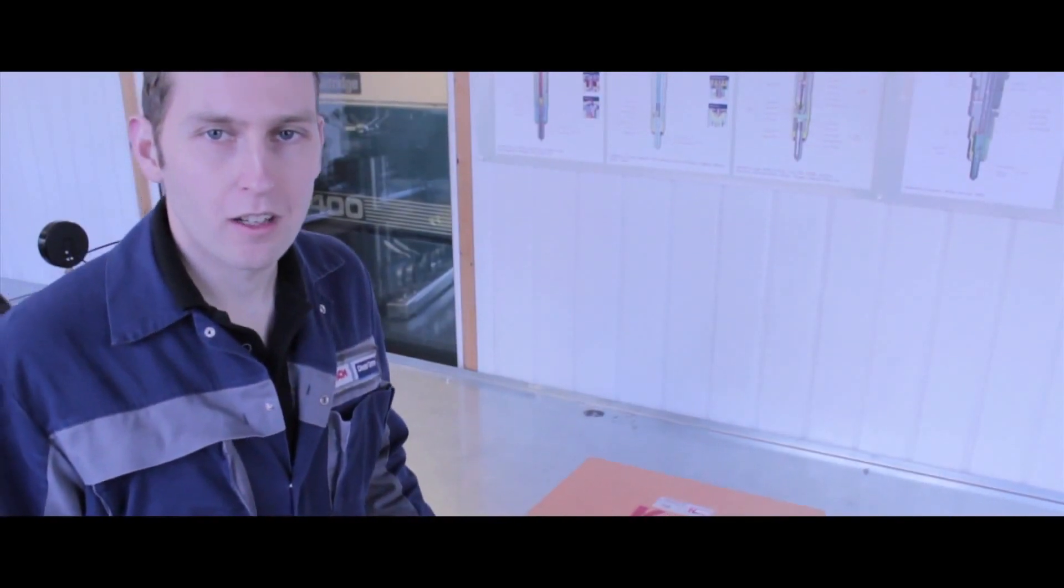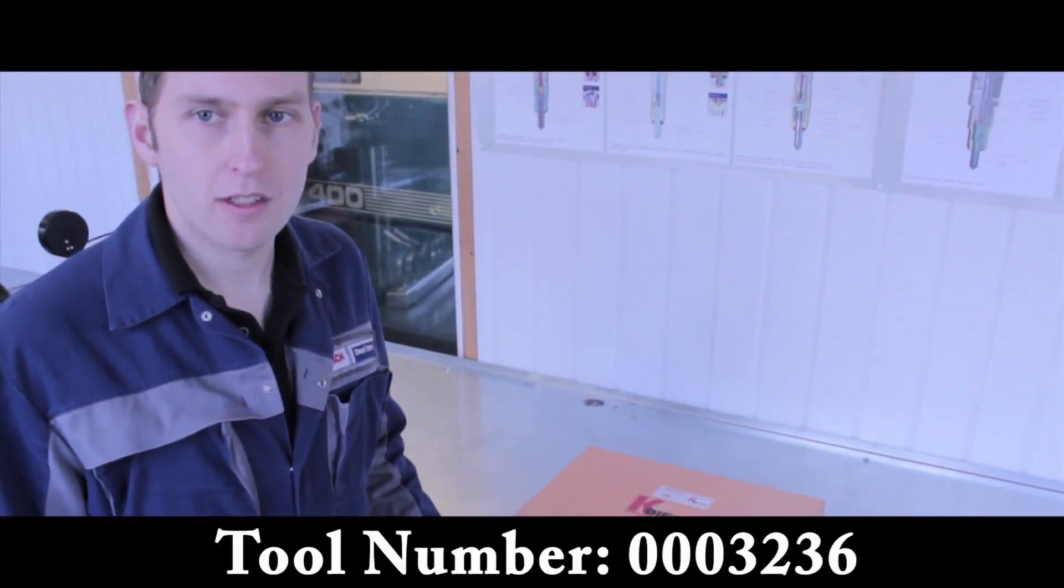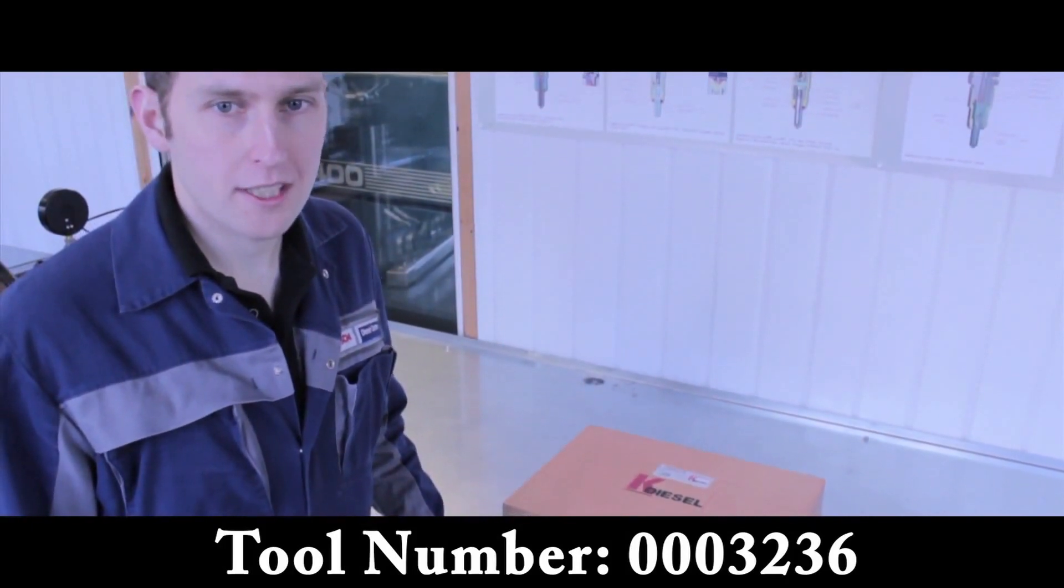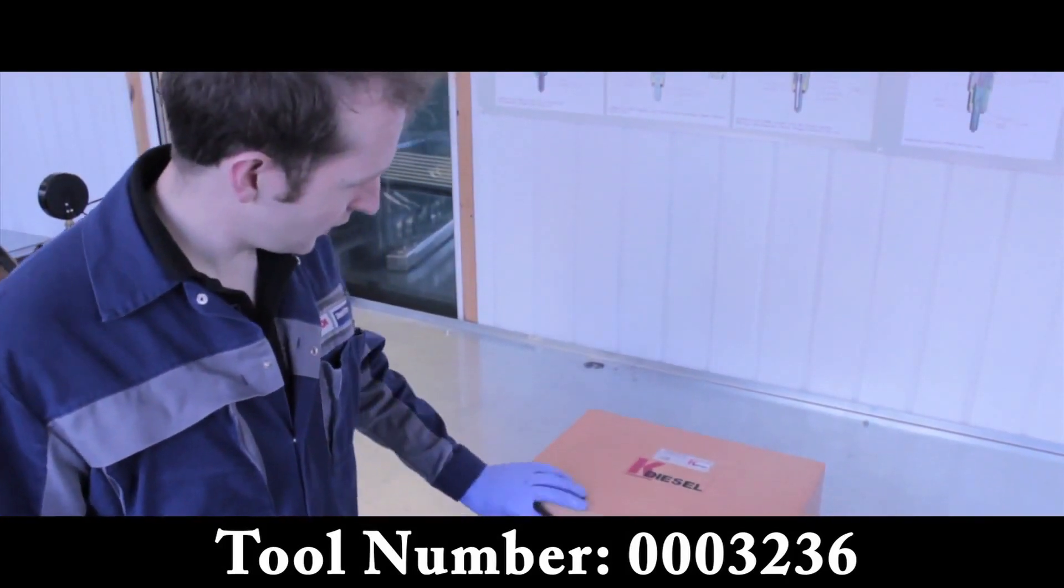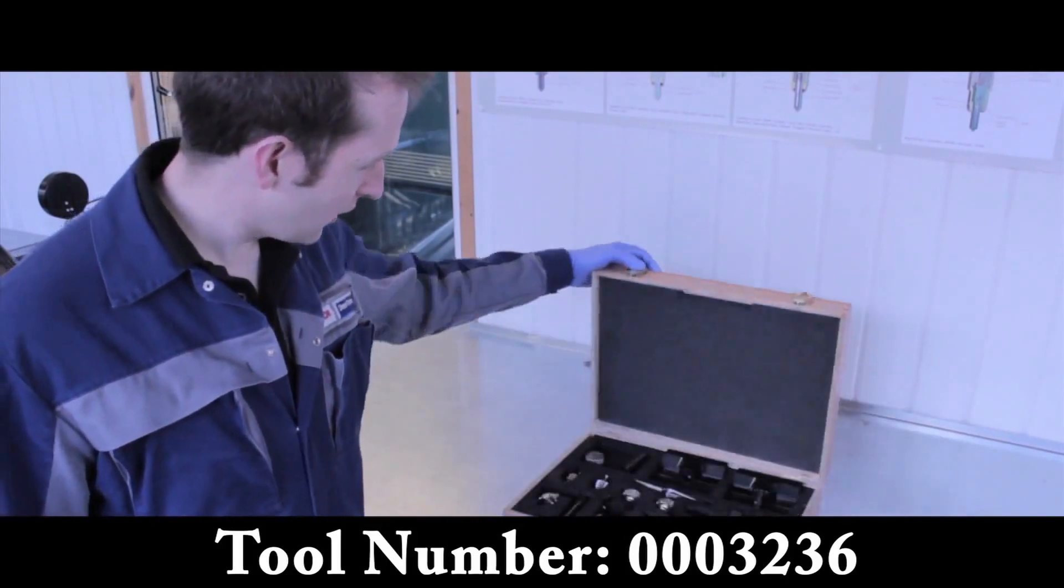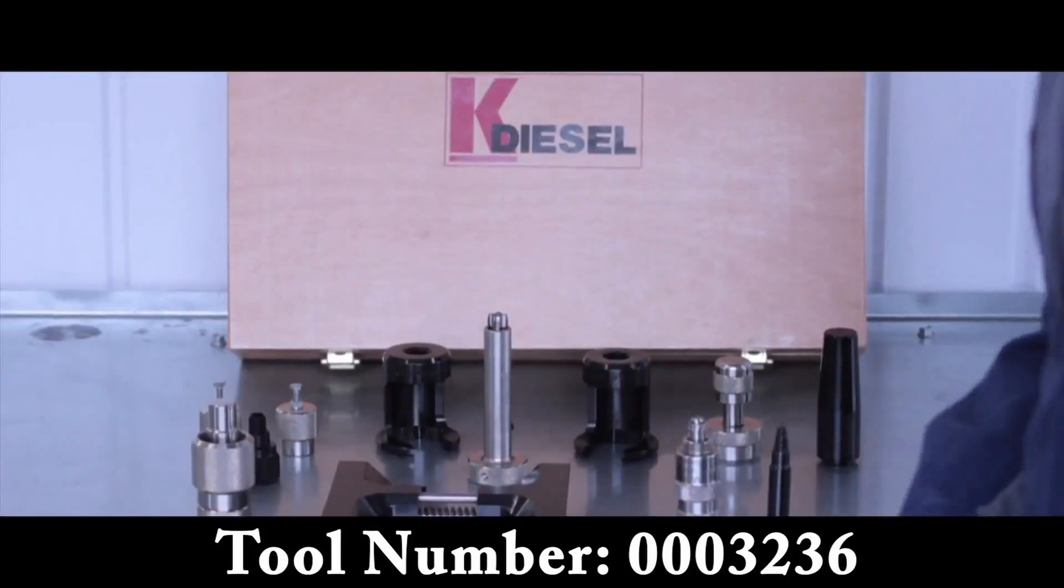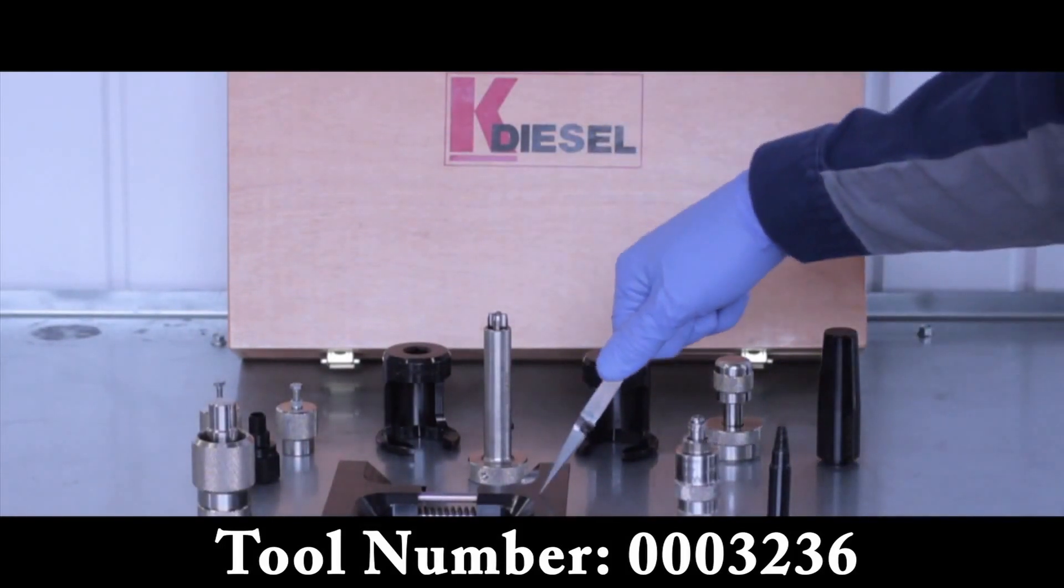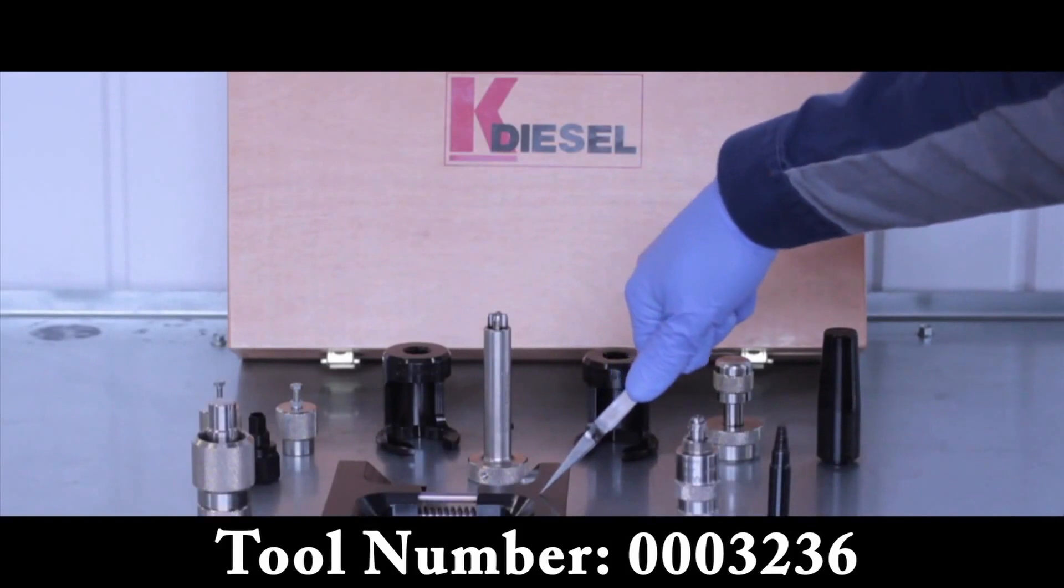The second thing that we're going to look at is the 0003236. These are the tools used for disassembly and assembly of the injector. A very nice presentation box and well laid out inside. Okay, so we're just going to have a look inside the tooling kit. We have a few wipes here. Firstly, you have your clamp block for holding and securing your injector in place.